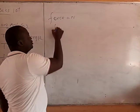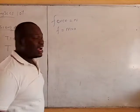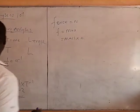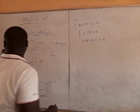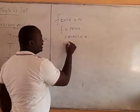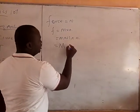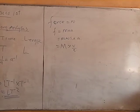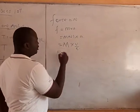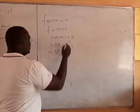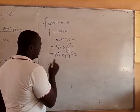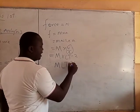Force is the product of mass and acceleration. So force is equal to mass times acceleration. And under dimension analysis, we take the first capital letter — mass is M, and acceleration is LT⁻². We have already derived that the dimension of acceleration is LT⁻². So the dimension of force will now be M times LT⁻², which gives MLT⁻². And that is the answer — the dimension of force is MLT⁻².